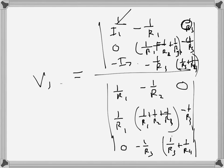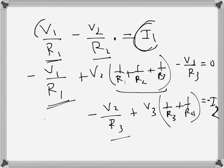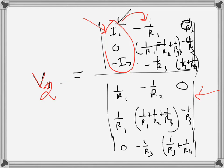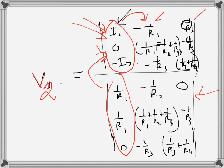We arrange the equations so that the first, second, and third unknowns follow in order. Note that the third unknown was 0 in the first equation, and the first unknown was 0 in the third equation. When solving for V1, the right-hand side replaces the first column; for V2 it replaces the second column; and for V3 it replaces the third column. Solving the determinant gives us the node voltages.